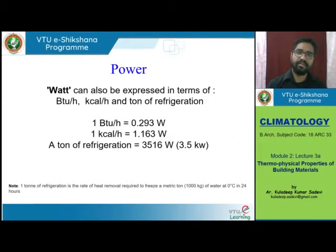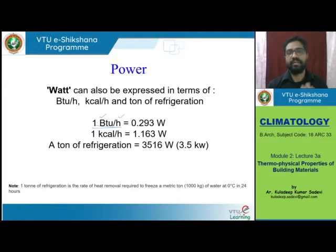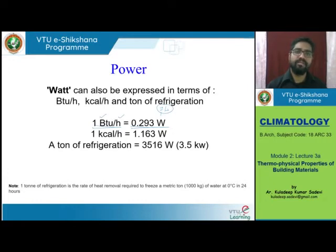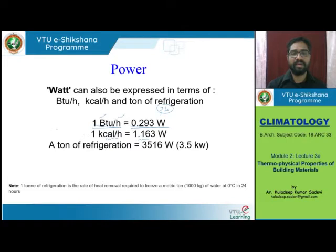One watt can also be measured in BTU per hour: 1 BTU/hour = 0.293 watts, and 1 kilocalorie/hour = 1.163 watts. One watt is one joule per second. So 1000 calories per hour is equal to 1.163 joules per second. These are comparisons between different units of power.